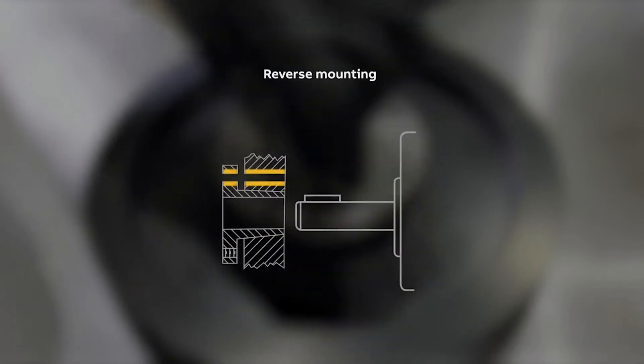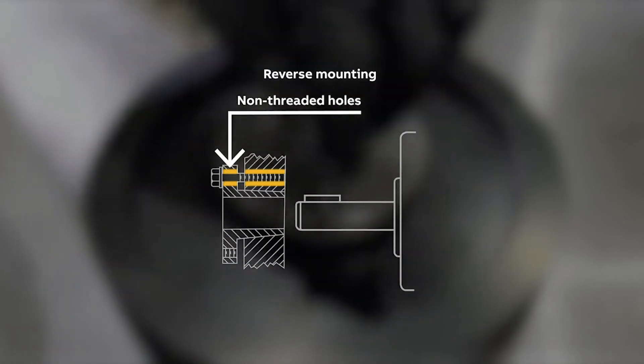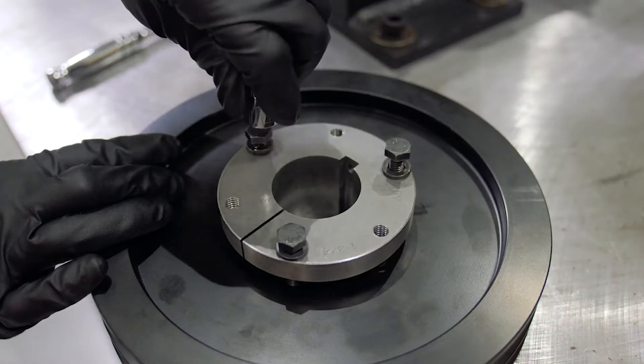For reverse mounting, align the holes so that the bolts can be placed through the non-threaded holes in the bushing and into the threaded holes of the hub. Loosely install all bolts and washers.